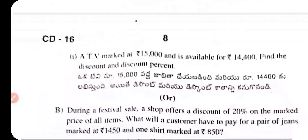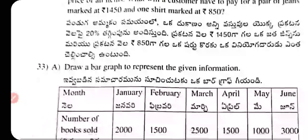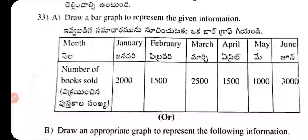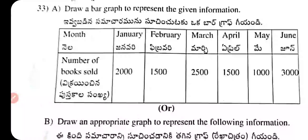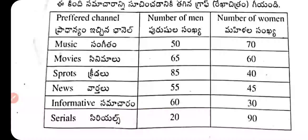Question 32A: An alloy of zinc and copper weighs 12½ kg. The ratio of zinc to copper is 1:4. Find the weight of copper in it. Question 32B: A TV marked at ₹15,000 is available for ₹14,400. Find the discount and the discount percentage. Question 33: Draw a bar graph to represent the given information about preferred TV channels. Number of men and women: Music 50/70, Movies 65/60, Sports 85/40, News 55/45, Informative 60/30, Serials 20/90.